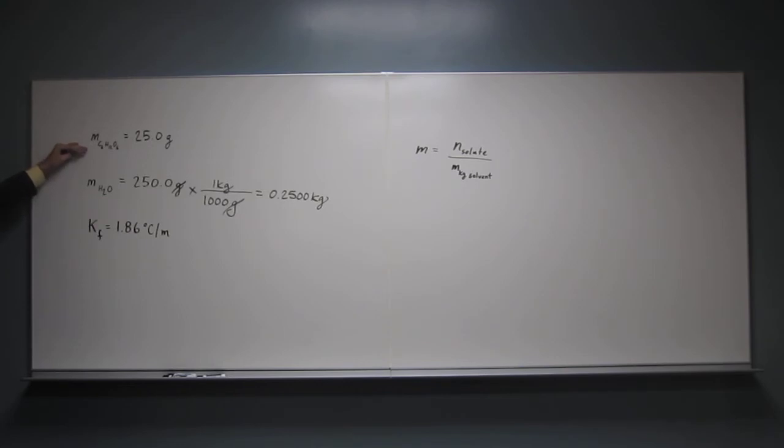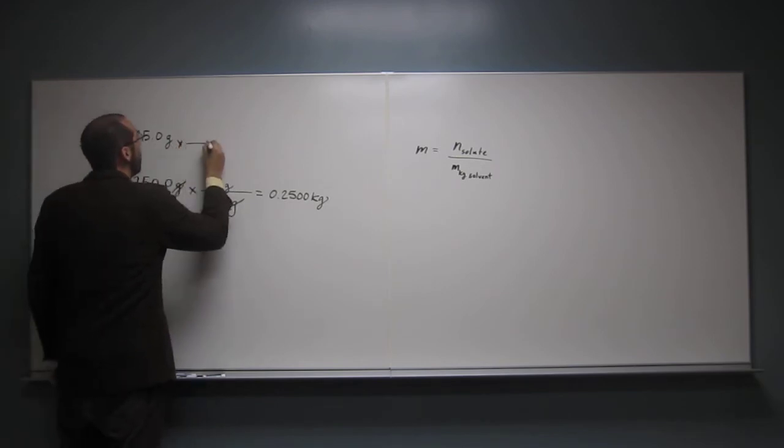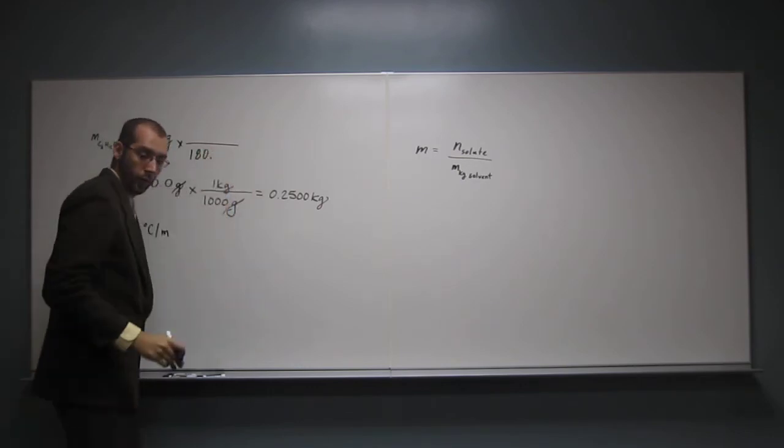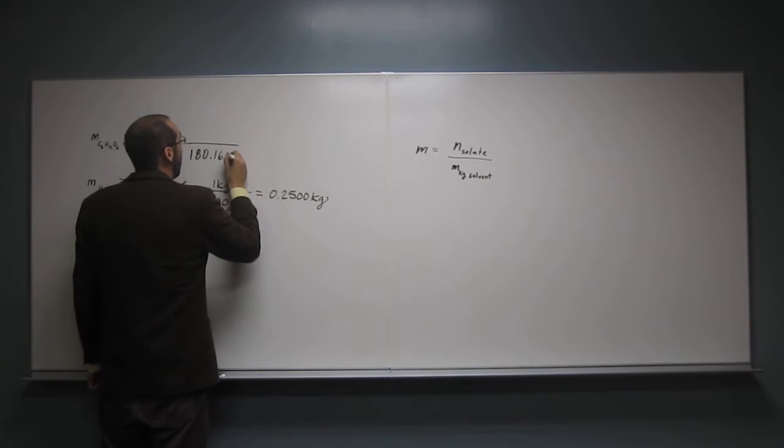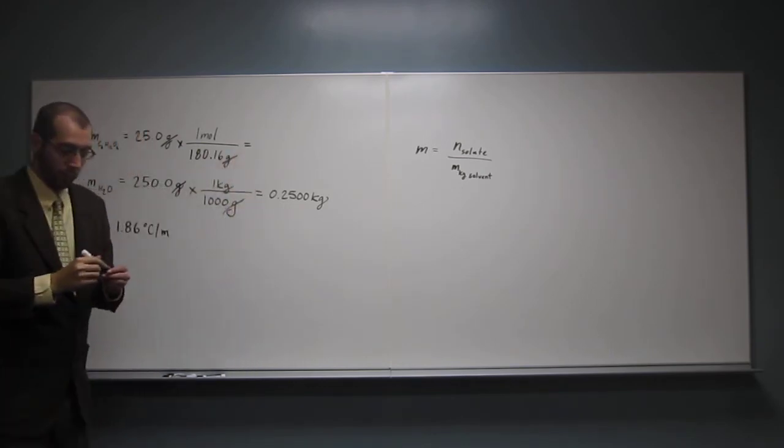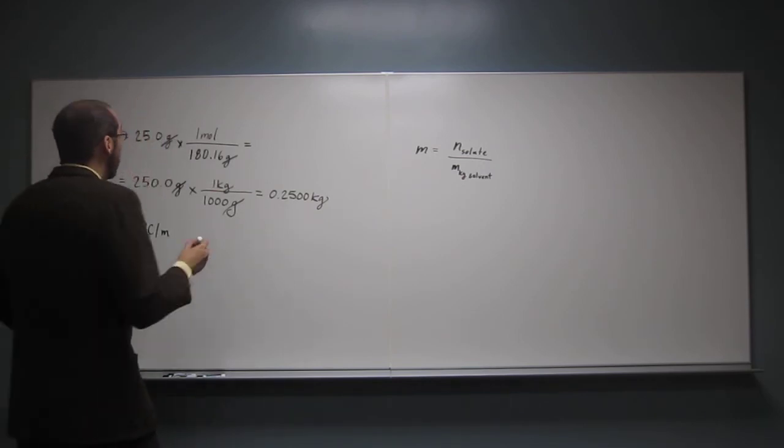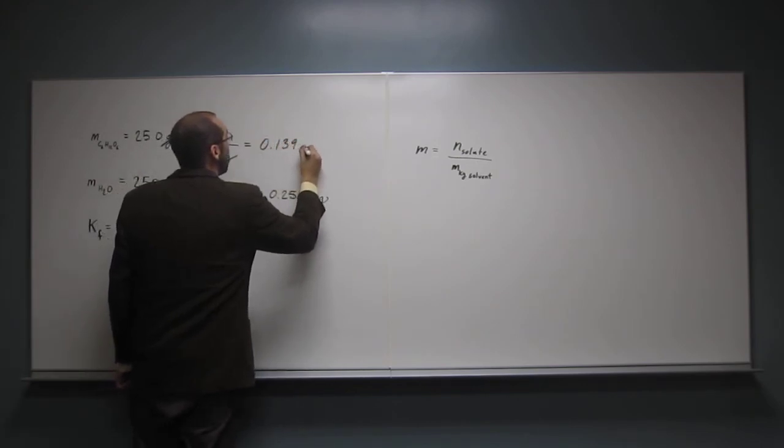This is the mass of fructose that we have. We've got to figure out what's the number of moles of fructose, since that's the solute. So in order to do that, we're going to have to figure out the molecular weight of fructose. So, 12.01, which is carbon times 6, plus 12 times 1.08, plus 6 times 16. So I get 180.16 grams for every one mole of fructose. So 25 divided by that gives us 0.139 moles.